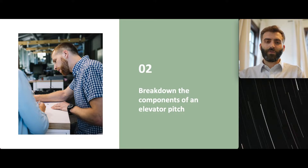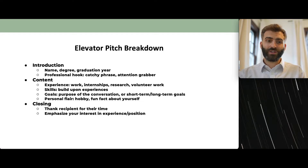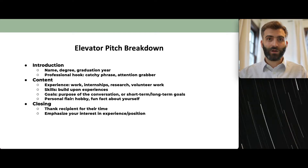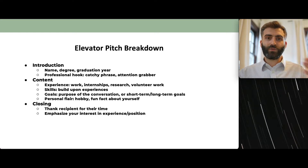Now that we know what an elevator pitch is, let's break down its components into manageable pieces so you can start creating your own. An elevator pitch consists of three parts: an introduction, some content, and a closing. It should be about one minute long, with a maximum of 90 seconds — so you really want to make every word count and be as concise as possible.